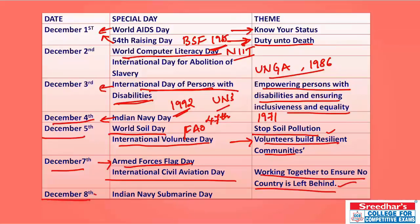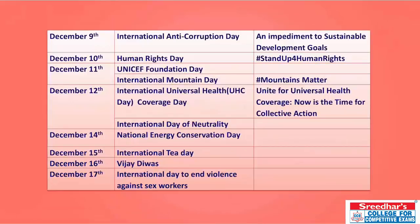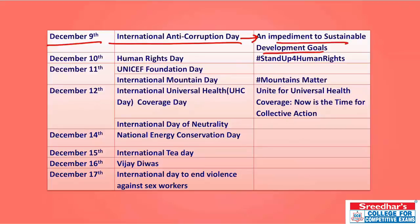December 8th is observed as Indian Navy Submarine Day, commemorating the induction of the first submarine — INS Kalvari — on this day in 1967. December 9th is International Anti-Corruption Day — the 2018 theme is 'An Impediment to Sustainable Development Goals.'